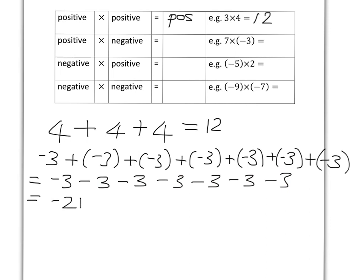So what we see here is that we calculate 7 times 3 is 21, but the answer is, in fact, negative. So the answer is negative 21. Any time we've got a positive and we multiply it with a negative, our answer is going to be negative.